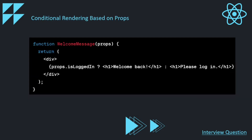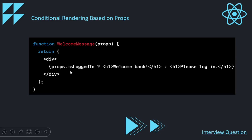Next is conditional rendering based on props. Similarly, suppose we have a component welcome message that accepts a prop from its parent component. We check props.is_logged_in, which takes the value from the parent. If it is true, we display the message 'welcome back', and if false, we display 'please login'. So now you have an understanding of how conditional rendering is done based on states and props.